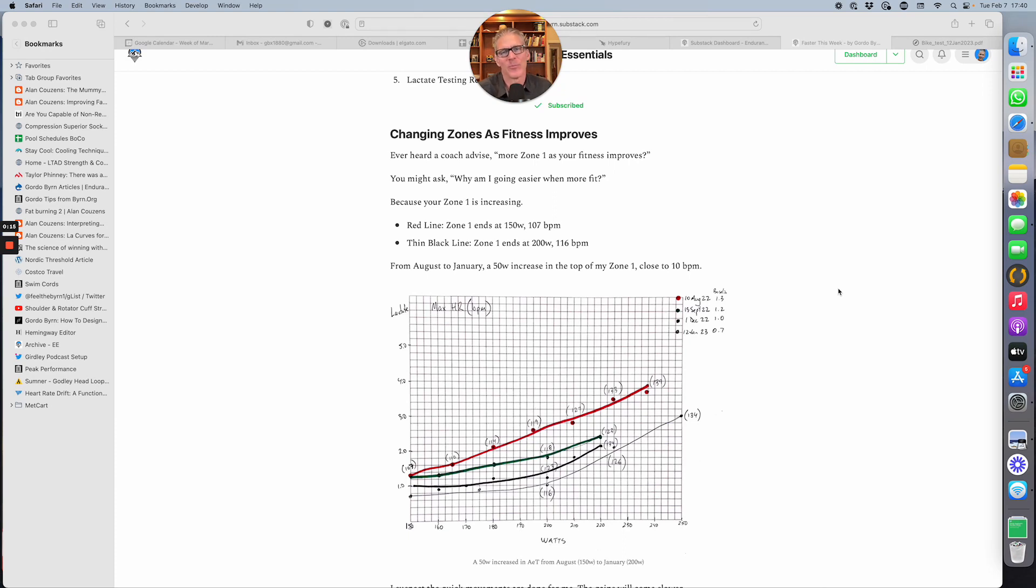I've been bike testing for about six months now, and I'm seeing some positive movements in my zones and in my performance. In other words, my lactate per watt at my breakpoints is coming down, and my first turn point, my first lactate turn point, the border between zone one and zone two, is moving to the right.